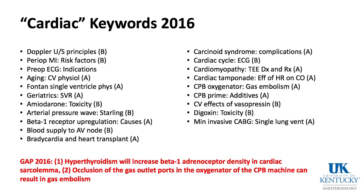Blood supply to the AV node is usually through the right coronary artery, but if it's a left dominant system it could be through the circumflex. Bradycardia in heart transplant — again, this is a denervated heart with no vagus or sympathetic innervation; if it becomes bradycardic it will not respond to atropine, but it will respond to exogenous and endogenous beta agonists because the beta receptors upregulate — another cause of upregulation of beta-1 receptors. Carcinoid syndrome: serotonin goes up, right-sided valvular lesions like tricuspid regurgitation.